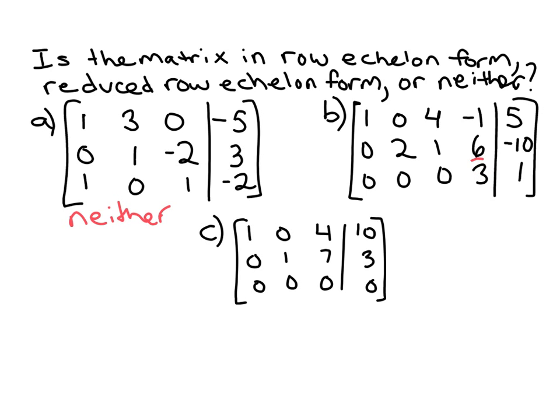And that's not the only non-zero term in that column. So example B here is in row echelon form but not reduced row echelon form.